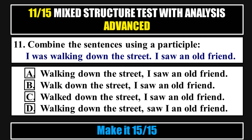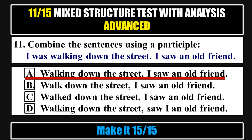Question 11. Combine the sentences using a participle: 'I was walking down the street. I saw an old friend.' Options: a. Walking down the street, I saw an old friend. b. Walked down the street, I saw an old friend. c. Walked down the street, I saw an old friend. d. Walking down the street, saw I an old friend. Answer A: Walking down the street, I saw an old friend. Analysis: The participle 'walking' is used to combine the actions of the same subject.